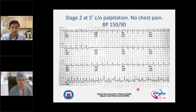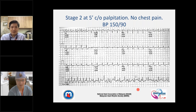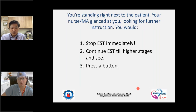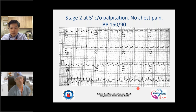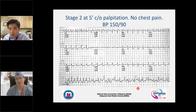At stage two, five minutes, something happened — she complained of palpitations. Many colleagues would say, of course you get palpitations, you are running, you are in sinus tachycardia. She had no symptoms at the time and blood pressure was 150 over 90. Now, what would you do when you see this? She has a symptom — palpitation. We had three options: stop the stress test immediately, continue to higher stages, or press a button.